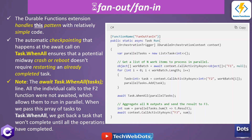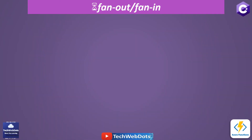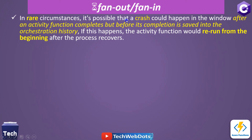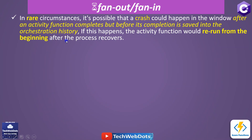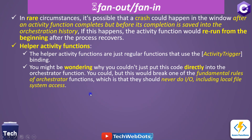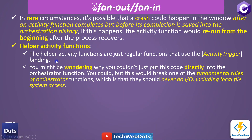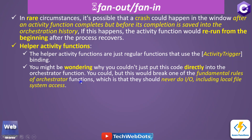Now that you've seen how the fanout/fanin pattern works, here are a few important points. In rare circumstances, a crash could happen in the window after an activity function completes but before its completion is saved into the orchestration history. In that case, the activity function would rerun from the beginning after process recovery. Also, the helper activity functions are just regular functions using activity trigger binding.